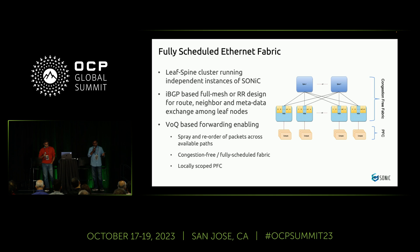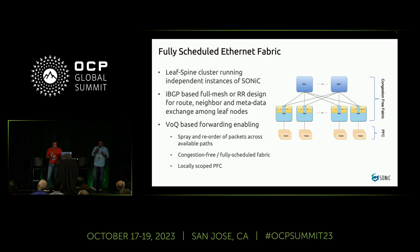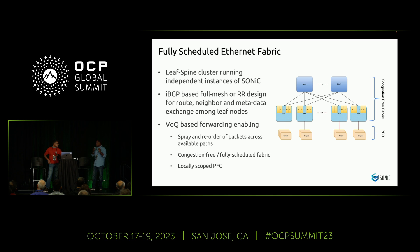We talked about a few design options to distribute state and config information across all the nodes in this cluster. As we take this conversation to the community we may find other options, but currently we are leaning towards using BGP to share state and config information across the cluster. PFC and RDMA-related functions are the key ingredients to make the network lossless inside the fabric while keeping the application working end-to-end.